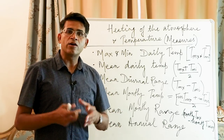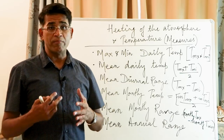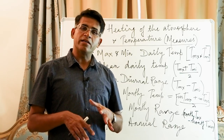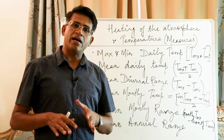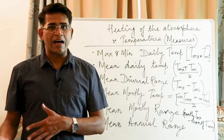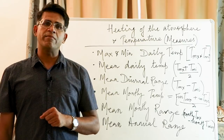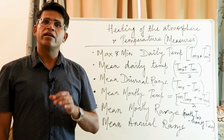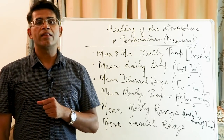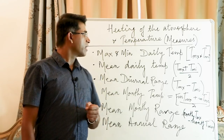Similarly, the coldest time is not at midnight. It is another two or three hours after midnight, so the coldest time is around 2 to 4 AM, and the hottest time is 2 to 4 PM.